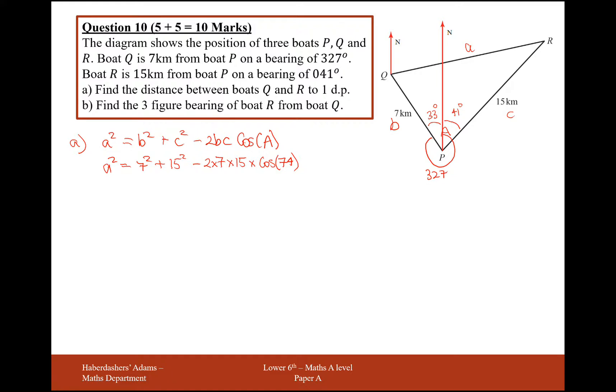So then reach for your calculator and type in this expression here. So A squared is going to come to 216.11 and square root that number there using the answer button on your calculator and we get 14.7 to one decimal place. This is our value from Q to R.